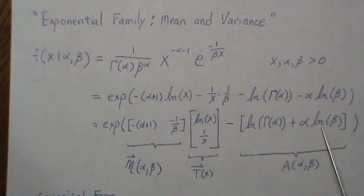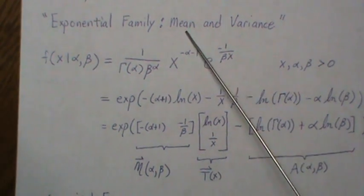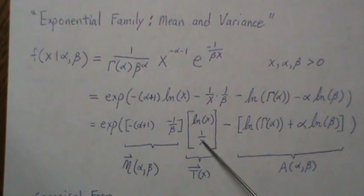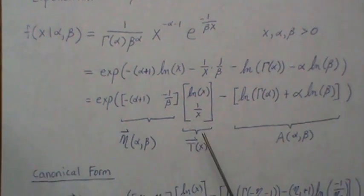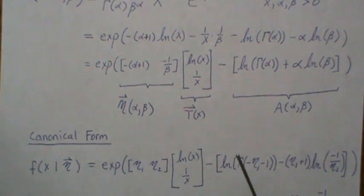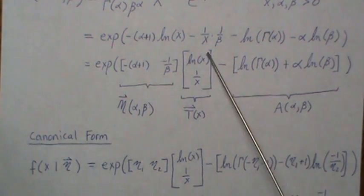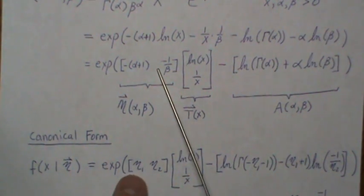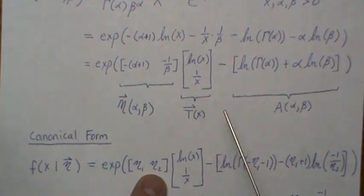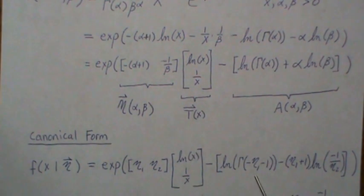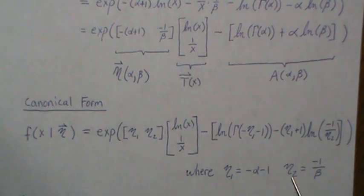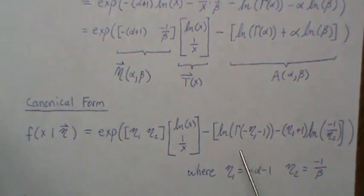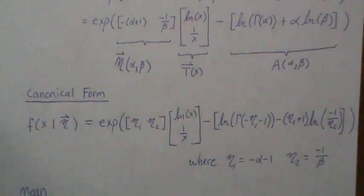This piece is called the log partition, which plays a very important role when calculating the mean and variance. These are the sufficient statistics for the inverse gamma distribution, and these are just parameters. To put this in canonical form — which is what we need to derive the means, variances, and covariances of our sufficient statistics — we generically write the natural parameter vector as η₁ and η₂. We see that η₁ equals -(α+1) and η₂ equals -1/β. Plugging these back in recovers the original form, but canonical form is where the magic happens.